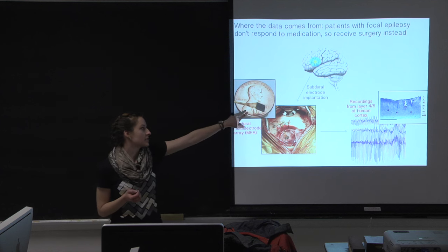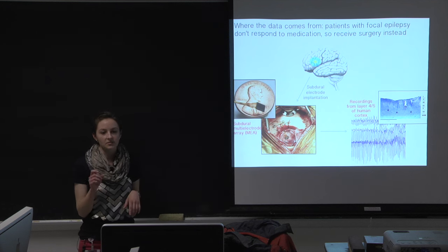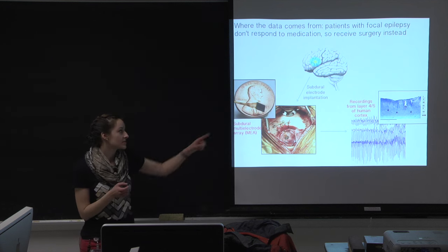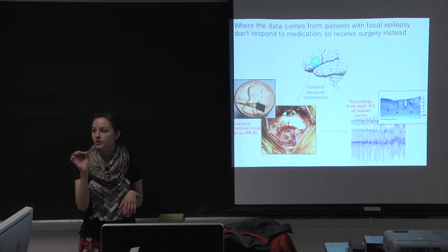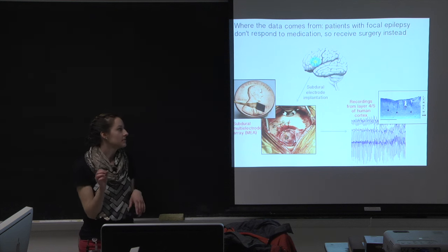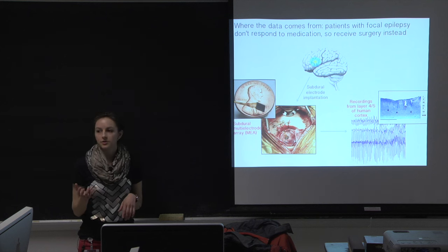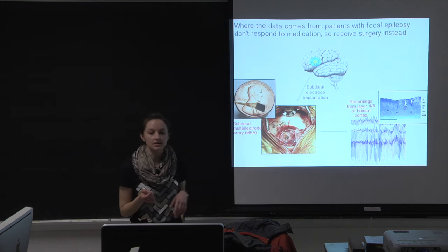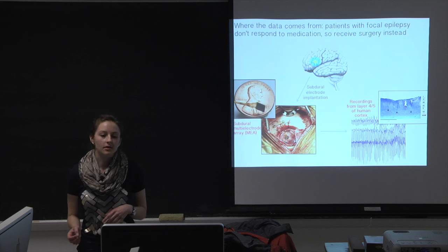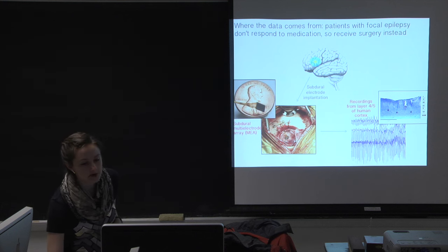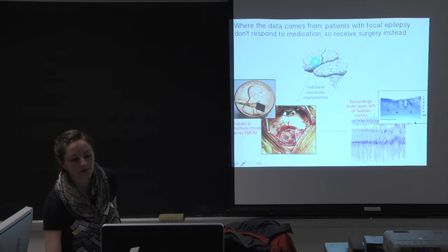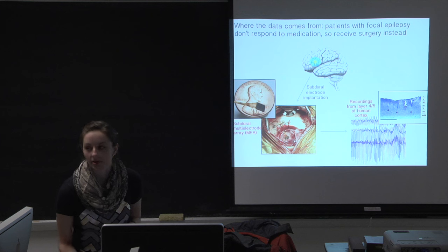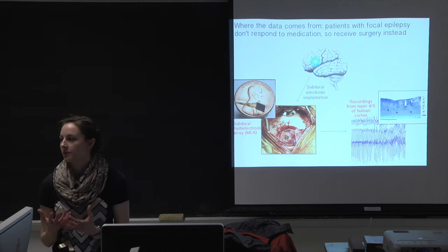I'm showing the array here — it's very small, about the size of a typical electrode on the grid. This array contains 96 microelectrodes that penetrate into the cortex, as you can see in the histology. You get recordings from layers four and five, so you're looking at a very small network.